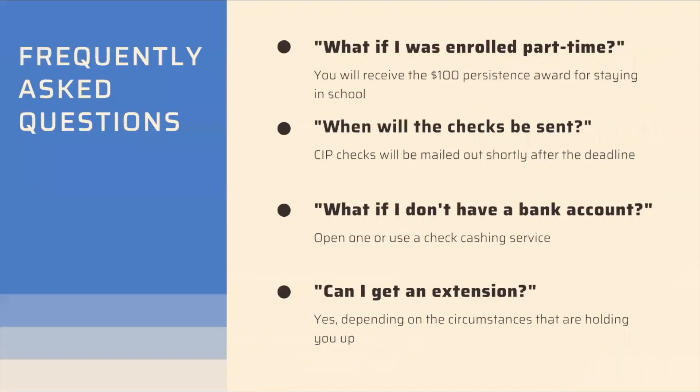Frequently asked questions. What if I was enrolled part-time? You will still receive the $100 persistence award for staying in school. When will the checks be sent? The checks will be mailed out shortly after the deadline for the CIP. It will take some time to process the checks, make sure everyone's address is correct, print labels, put them on envelopes, stuff the envelopes, take them to the post office, and then however many days it takes — depending on how far away you are — for the check to go through the mail.